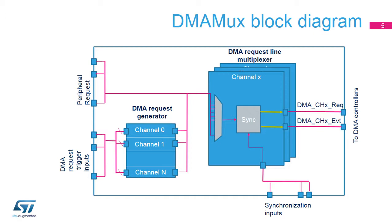The DMA MUX Request Multiplexer enables routing a DMA request line between the STM32H7's peripherals and its DMA controllers, using a programmable multi-channel multiplexer. Each channel selects a unique DMA request line unconditionally or synchronously with events from its synchronization inputs. The DMA MUX may also be used as a DMA Request Generator from programmable events on its input trigger signals.